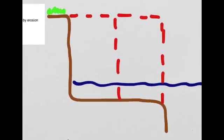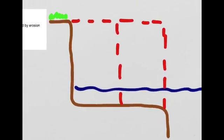The process gets repeated and you can see in this final diagram that cliff retreat has occurred even further inland as we move back.